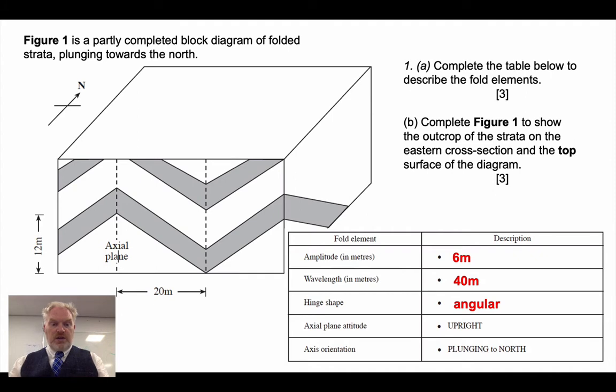We can see that there's quite a sharp bend in these rocks at the hinge. We're also told that the axial plane attitude is upright. And also that these folds are plunging in a northerly direction. Now that helps us when we're filling in the rest of this block diagram.